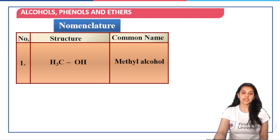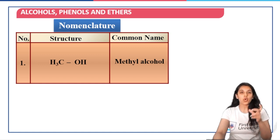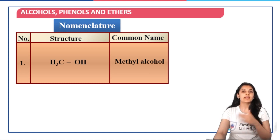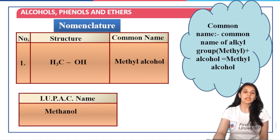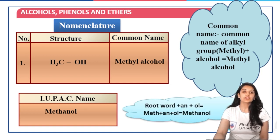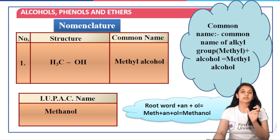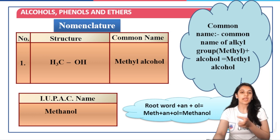When we have the structure CH3OH, the name is methyl alcohol because one of the hydrogens of methane has been removed and replaced with OH. So it's methyl alcohol. The common name is that of the alkyl, that is methyl, plus OH is alcohol — so methyl alcohol. The IUPAC name is methanol: root word meth because there is one carbon atom, 'an' because it's sp3 hybridized alkane, plus 'ol' because it is alcohol — so methanol.